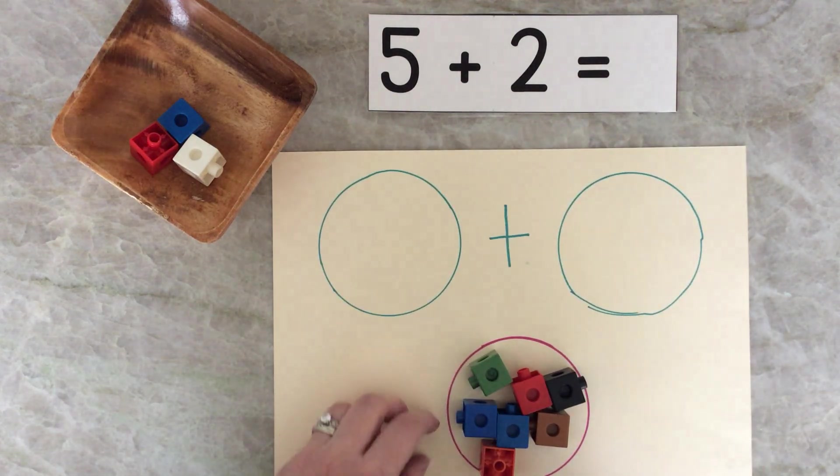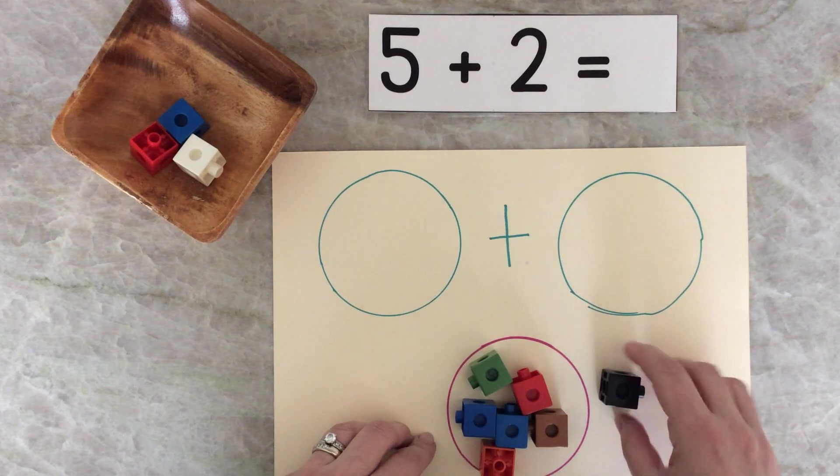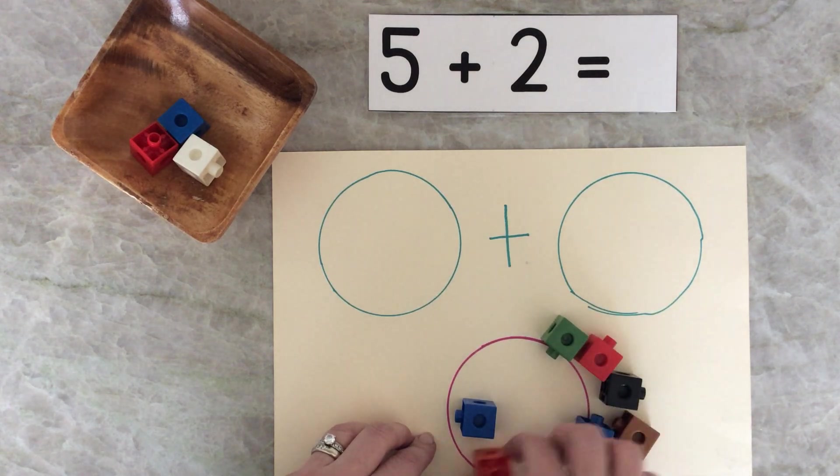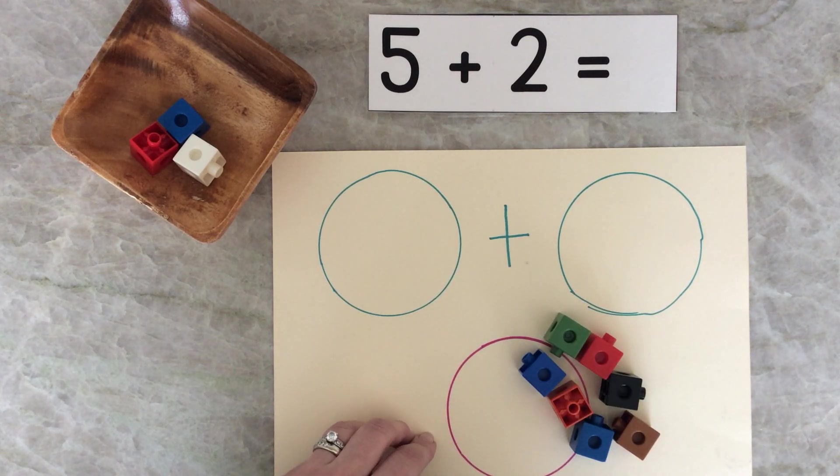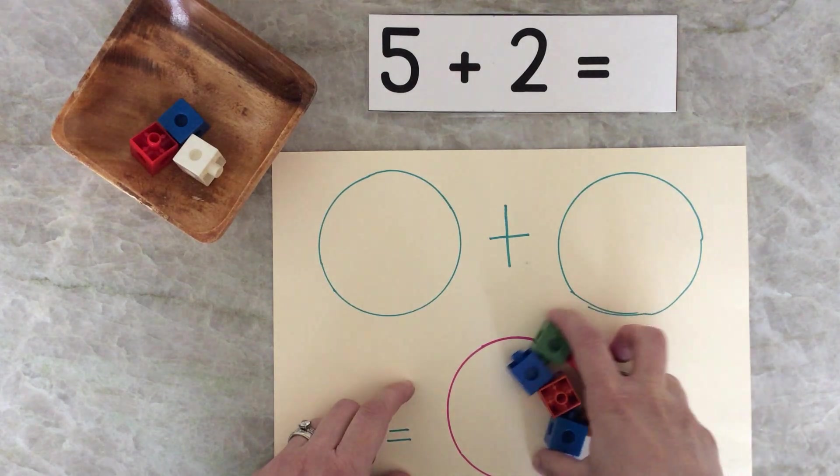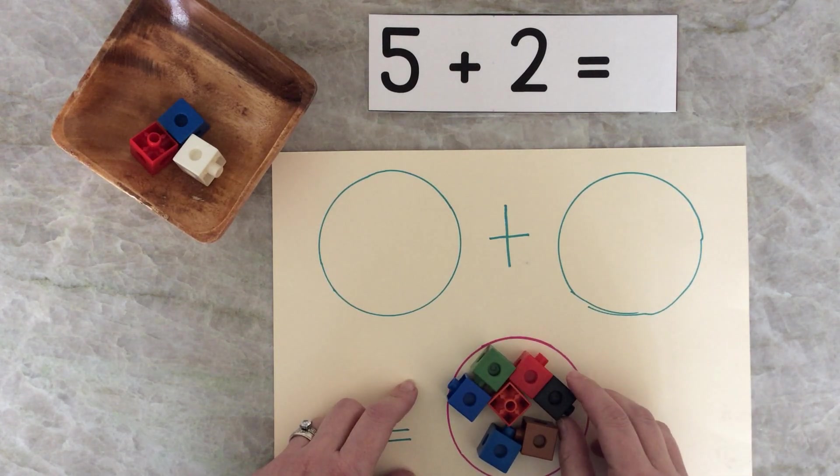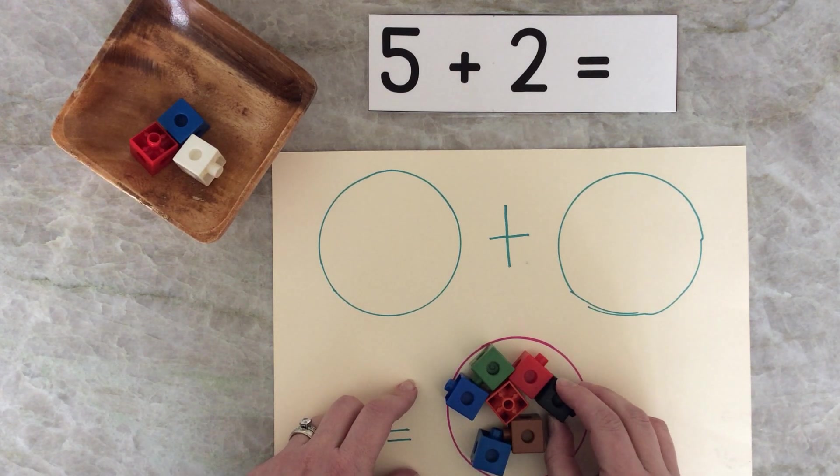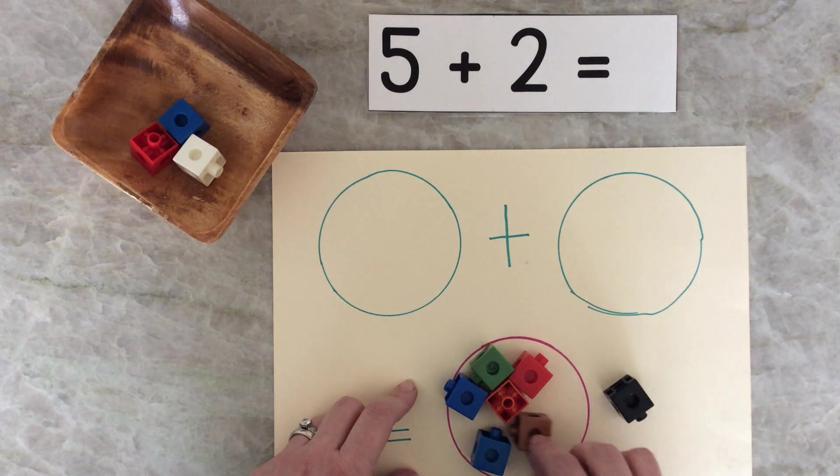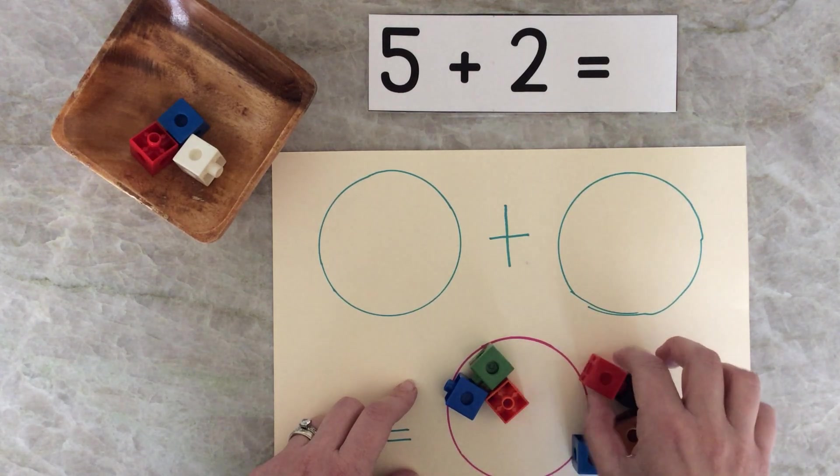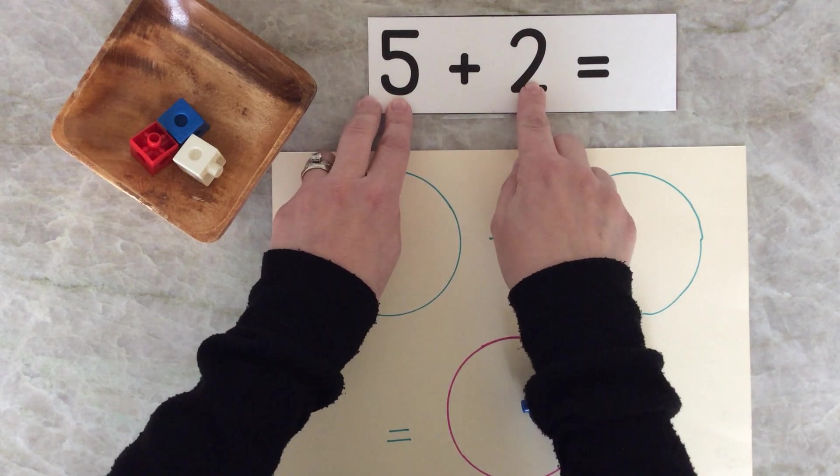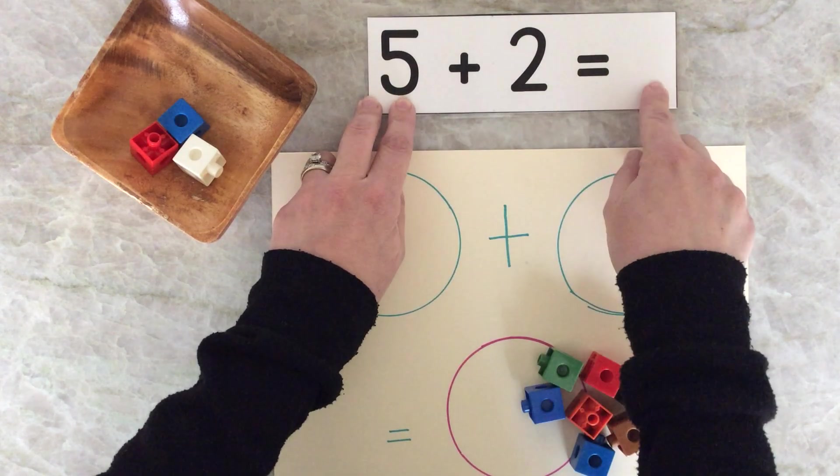And now I'm going to count and figure out the answer. One, two, three, four, five, six, seven. Did you see how I figured it out? Here's a trick. When I count, I move them over so I know that I counted it already. And I won't count it again. One, two, three, four, five, six, seven. That's my little secret. Five plus two equals seven.